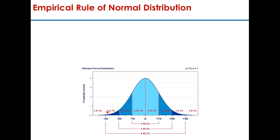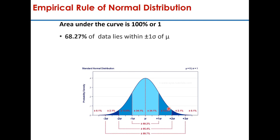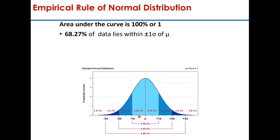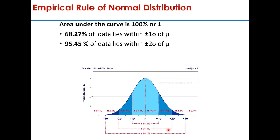This is how a normal distribution represents data. The total area under the curve is 1, that is 100%. If you take mu plus or minus 1 standard deviation on either side, it represents 68.27% of the data. Similarly, mu ± 2σ represents 95.4% of the data, and mu ± 3σ represents almost 99.7% of the data.